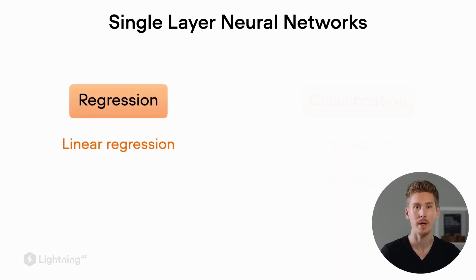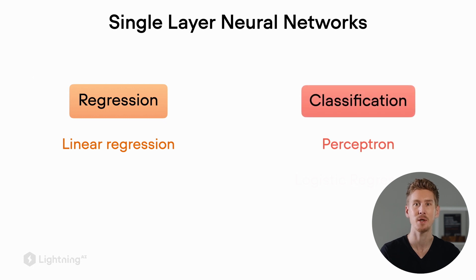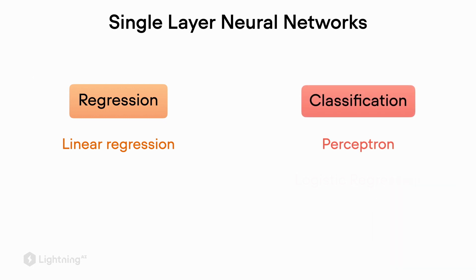If you are familiar with linear regression, which is the method for regression analysis, this would also be a type of single layer neural network. Similarly, the perceptron that we talked about in the previous units would be another form of single layer neural networks, next to logistic regression, which is the star of the show here in this video.